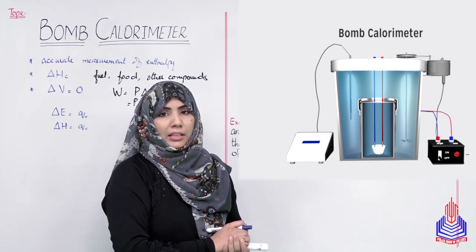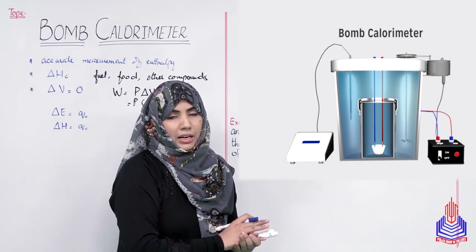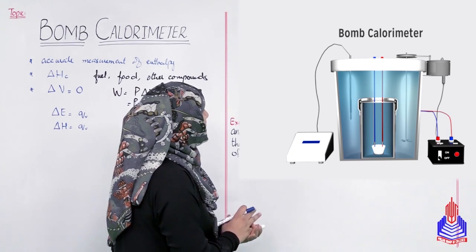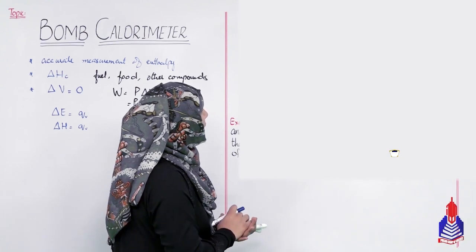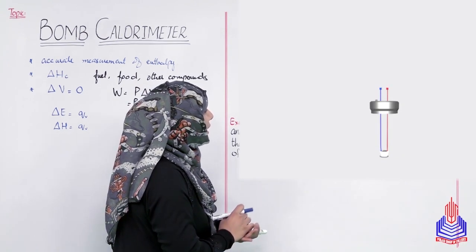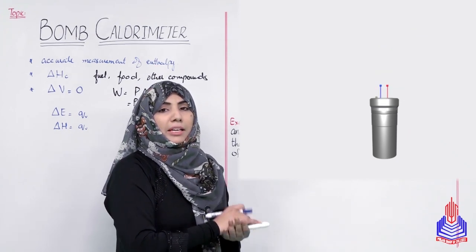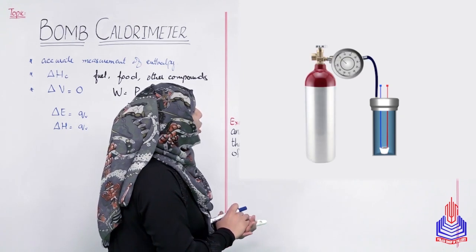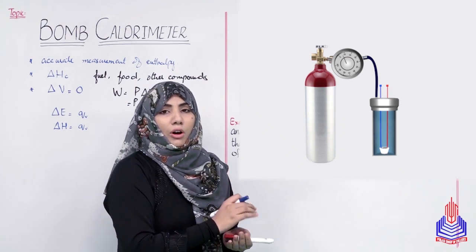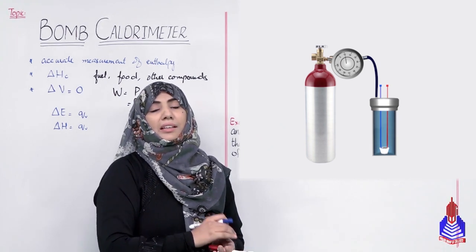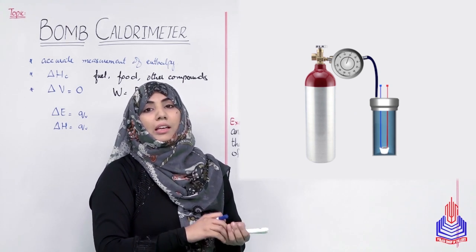Steel vessel के अंदर thermometer भी मौजूद है और stirrer भी मौजूद है, और यह पूरा steel vessel battery के साथ attached है। Thermometer is Beckmann's thermometer जो temperature को measure करेगा। अब इस पूरे setup को start करते हैं - crucible में अपना sample as a fuel place करेंगे। Crucible electrodes के साथ attached है और electrodes platinum wire के साथ attached हैं। Steel bomb के अंदर oxygen fill up करते हैं at 20 to 30 atmospheric pressure - क्यूंकि combustion के लिए oxygen required होती है।